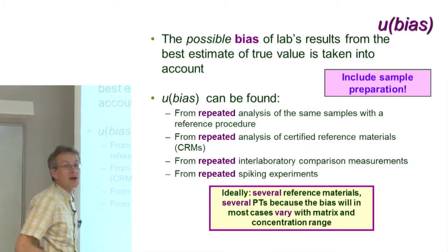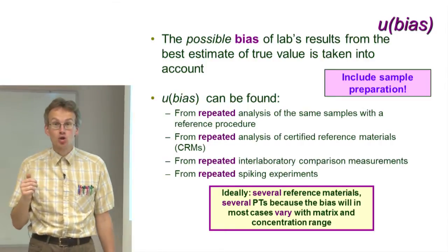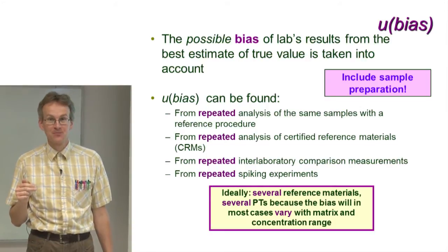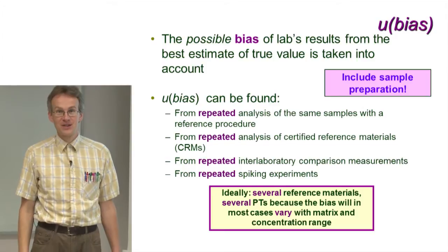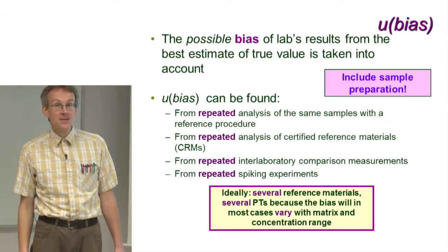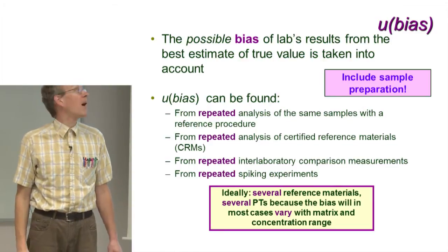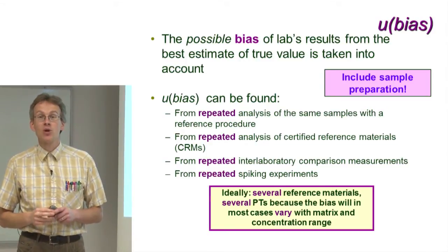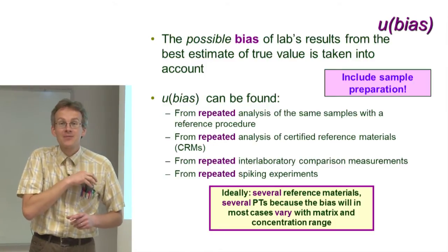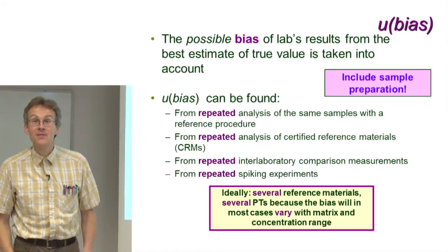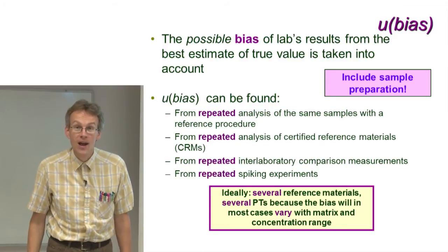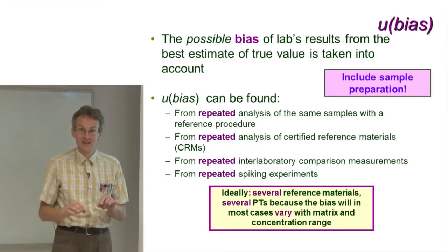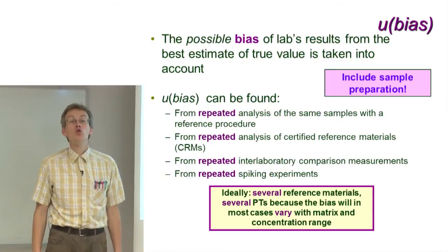Let us now look at the bias component and let me explain why I've put the word 'possible' in several places. The point is that determining the true bias of the procedure is not easy. It needs a lot of parallel measurements under carefully controlled conditions, and if the number of measurements is not very large, then the bias estimate will always be mixed with random effects. It can easily happen that in fact the procedure does not have any bias at all, but we are simply not able to separate the systematic and random effects because we do not do enough measurements.